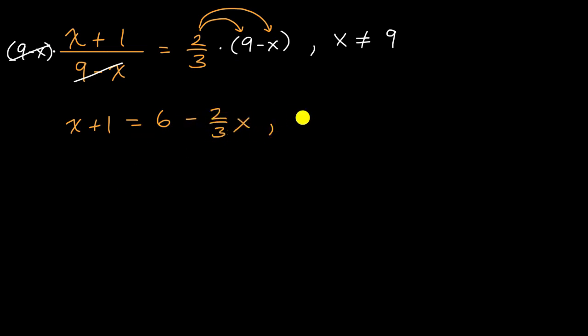And once again, let's remind ourselves that x cannot be equal to nine. And then we can get all of our x's on the same side. So let's put that on the left. So let's add two-thirds x to both sides. Plus two-thirds x, plus two-thirds x.